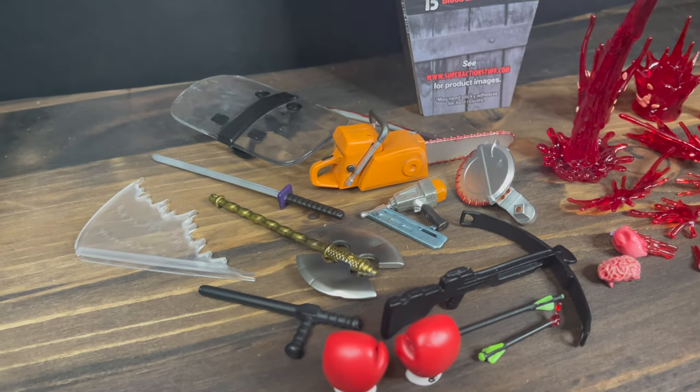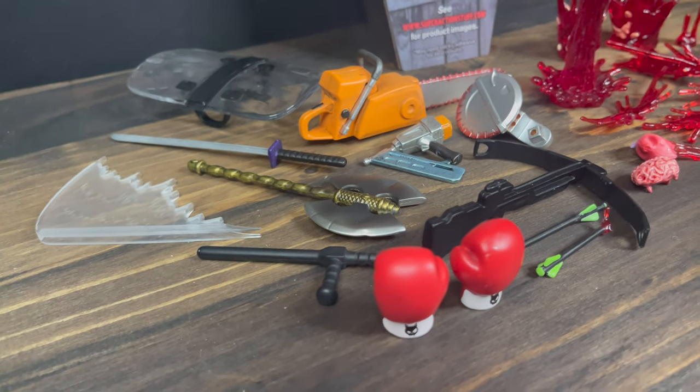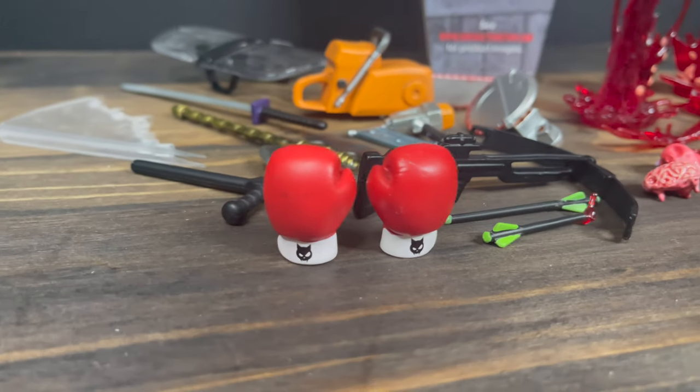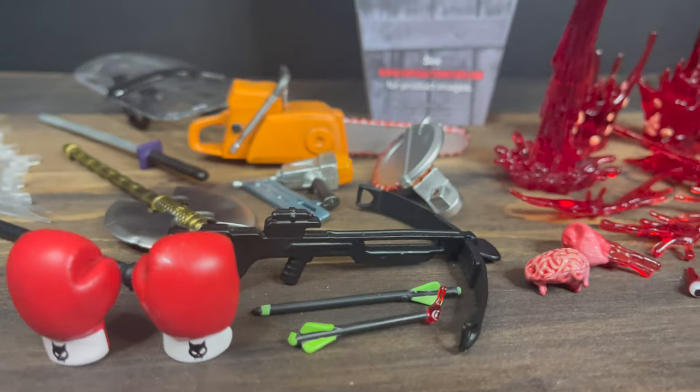Like I said, I'll put a link down in the description below. You can grab it off Entertainment Earth. Let me know down in the comments what's your favorite accessories. For me, the boxing glove, I like the chainsaw, some of the blood effects are cool, I'll give it to them. And I like the riot gear, I really like the riot shield.